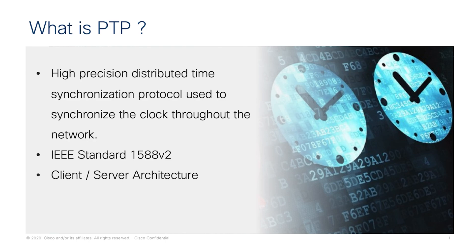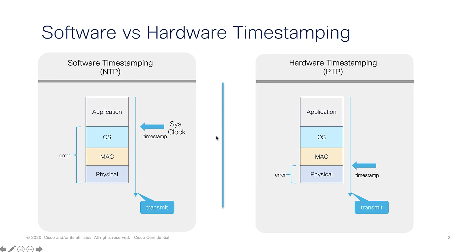Catalyst 9000 switches support PTP v2, which is version 2 of PTP. There are other protocols that can distribute the clock, like NTP — Network Time Protocol. NTP provides accuracy in milliseconds or seconds, whereas PTP provides accuracy in microseconds or nanoseconds. Hardware timestamping is critical to providing this level of accuracy. Software timestamping is done further up in the OSI layer, whereas hardware timestamping is done at the physical layer, resulting in greater accuracy.